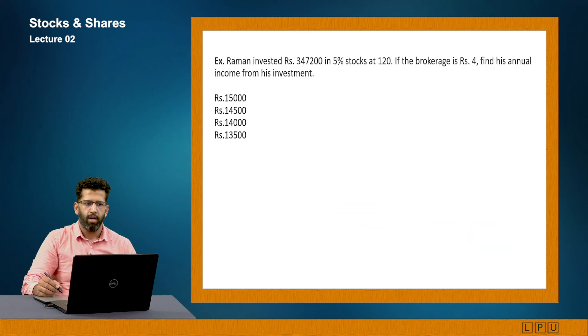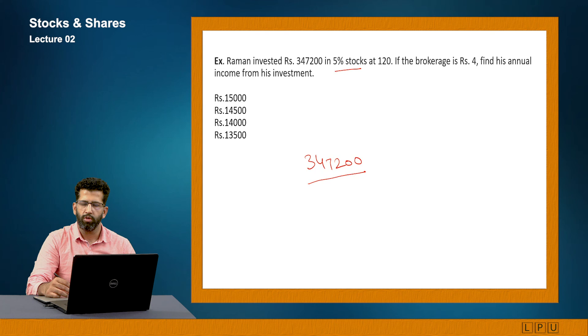Raman invested Rs 347200 in 5% stock at 120. If the brokerage is 4, find the annual income from his investment. Now, he has invested 347200. Number of shares, understand this is a 5% stock. So in order to find out his income, first of all, number of shares I have to find out. Total investment is this. Per share amount is 120. But remember that he also paid brokerage of Rs 4. It is directly given Rs 4. If it was 4%, I would have said 4% of Rs 100. But they have directly given you Rs 4. So per share he has paid Rs 4. So 120 plus 4 will give me Rs 124.